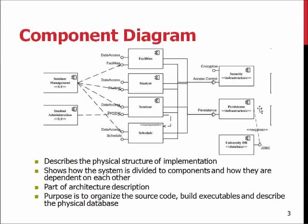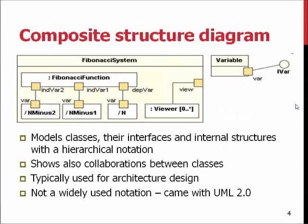The component diagram illustrates what components are communicating with each other and gives an idea of what components the final system will have. The composite structure diagram goes inside one of those components and defines the classes, their interfaces, and internal structures, going down even to the variable level.